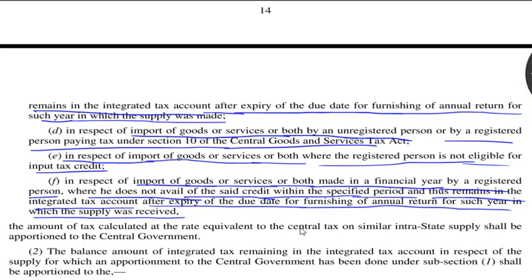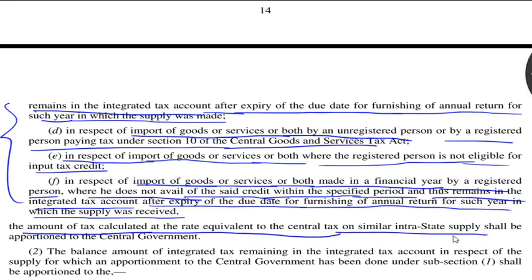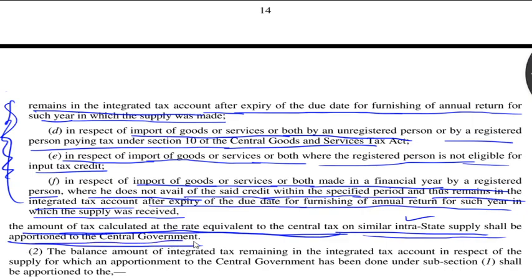So, out of all these integrated tax amounts, the amount of tax calculated at the rate equivalent to central tax on similar intrastate supply shall be apportioned to the central government.